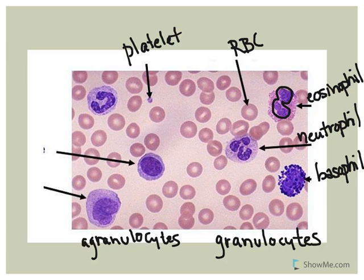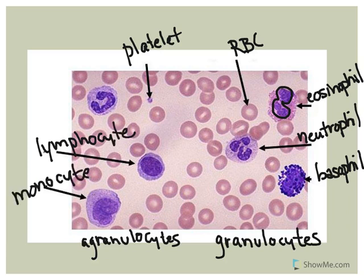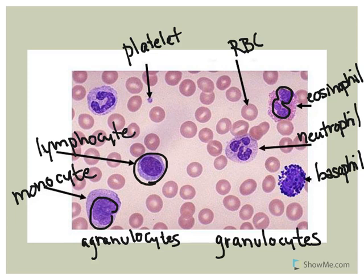The agranulocytes include the lymphocytes and the monocytes. Monocytes are very large agranular leukocytes with variable-shaped nuclei — this one looks kind of kidney-shaped. The lymphocytes are agranular but pretty small, almost the size of a red blood cell. Their nuclei are sometimes so large that all you really see is a very thin rim of cytoplasm around them.